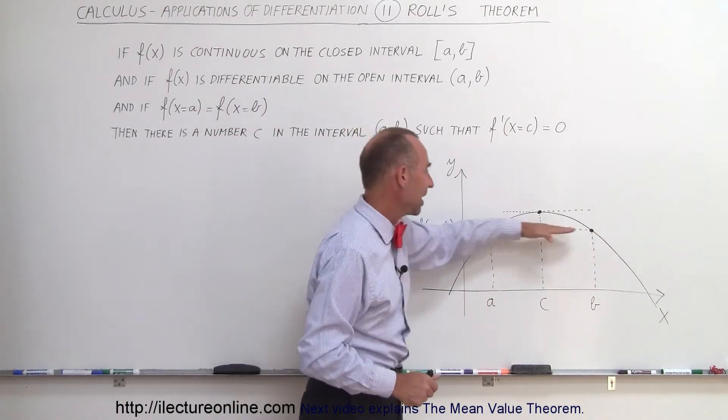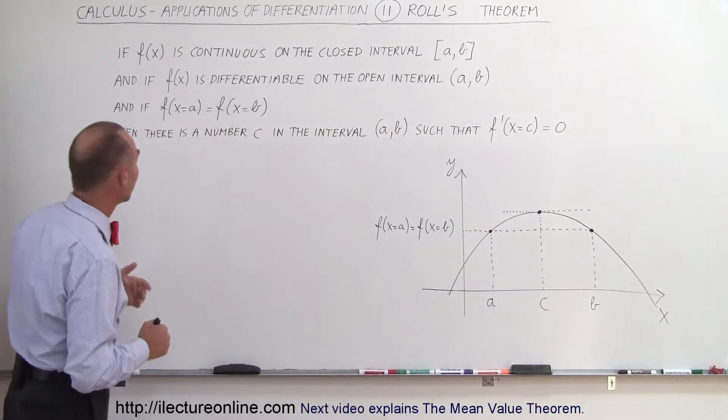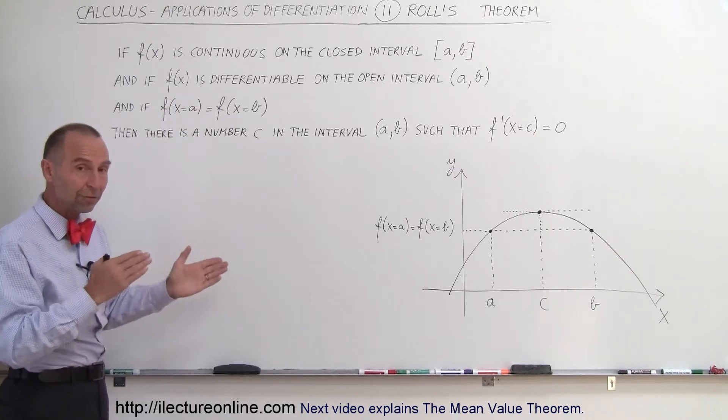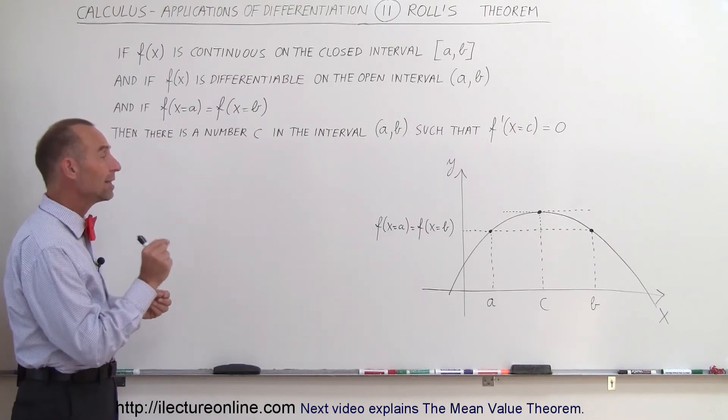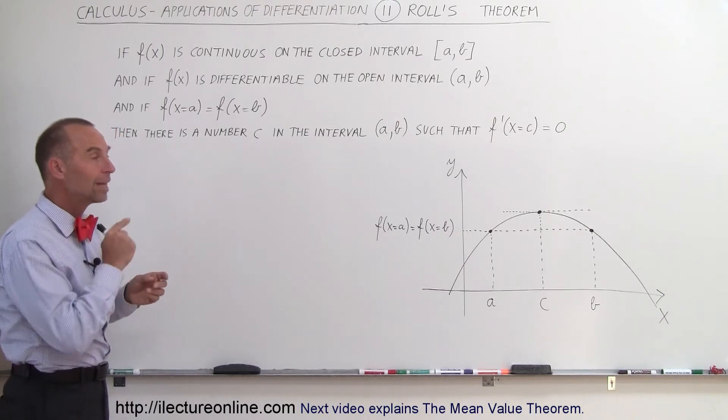In other words, they are at the same vertical height. In fact, if all those things are true, then Rolle said there must be a number, let's call it c, in the interval between a and b, such that when you take the derivative of the function at that location, you get zero.